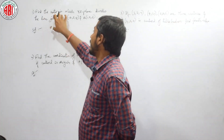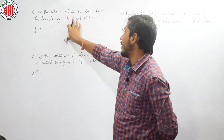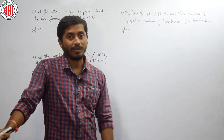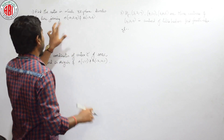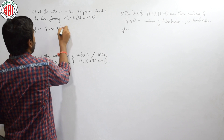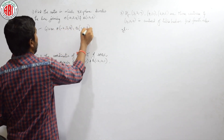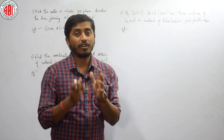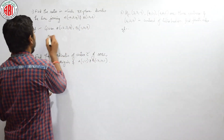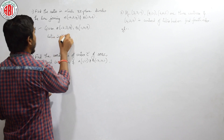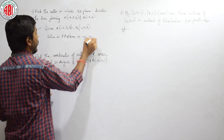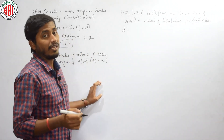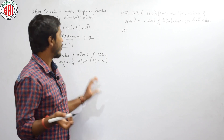The question given here is: find the ratio in which the XZ plane divides the line joining A(-2, 3, 4) and B(1, 2, 3). If it is in the 2D coordinate system, we used to use the section formula, that is mx2 plus nx1 by m plus n. Similarly, we can even use the same formula, or else we can directly write: given two coordinates, A is minus 2 comma 3 comma 4 and B is 1 comma 2 comma 3.